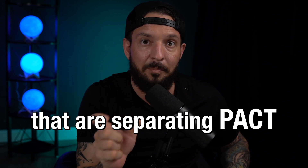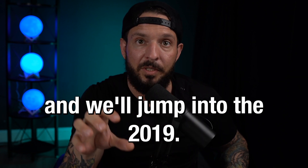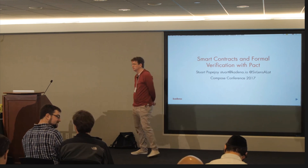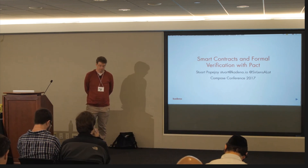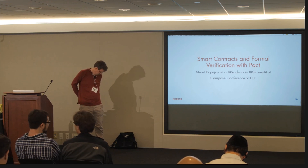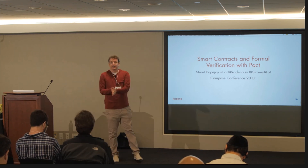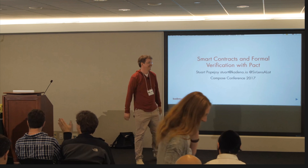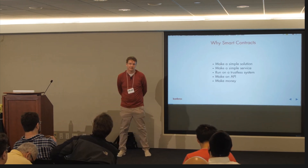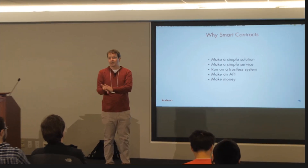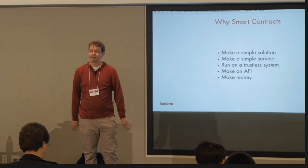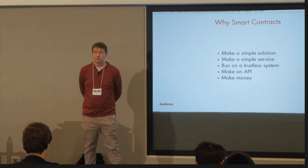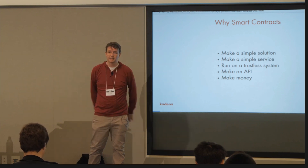These are just the little things separating Pact from every other coding language. Next up we have Stuart Popejoy, who's going to tell us about the smart contract system he is working on at his new company. Smart contracts are things that run on blockchains. What you can do with smart contracts is build a simple solution — you've got a business problem that involves two or more people working together, maybe adversarial, maybe not, and you want to represent interactions between those people in the simplest way possible.